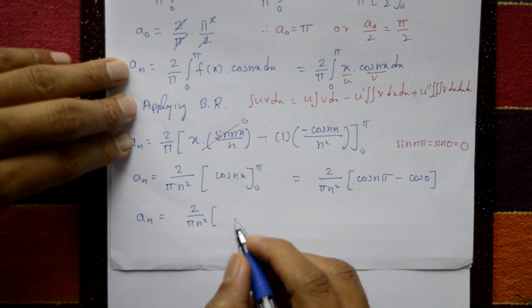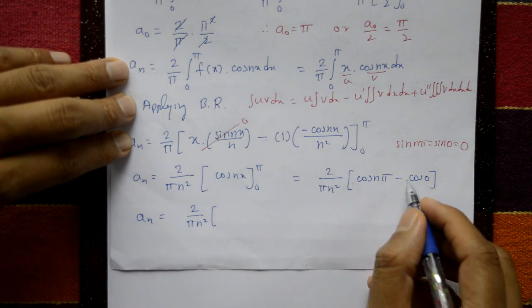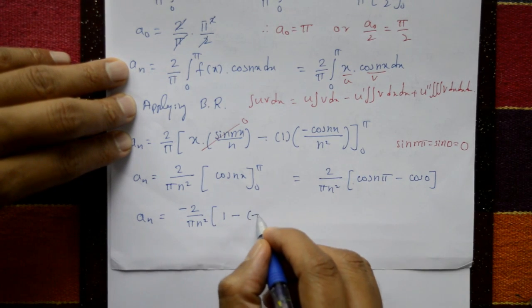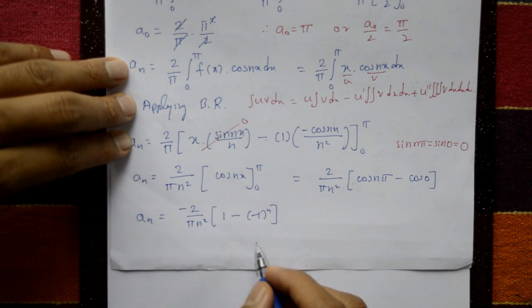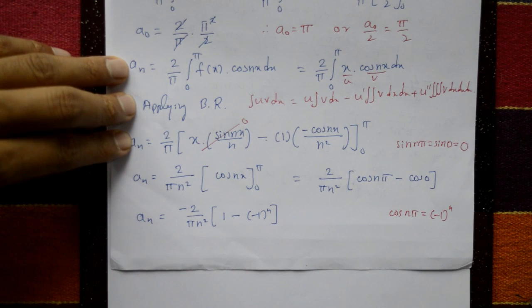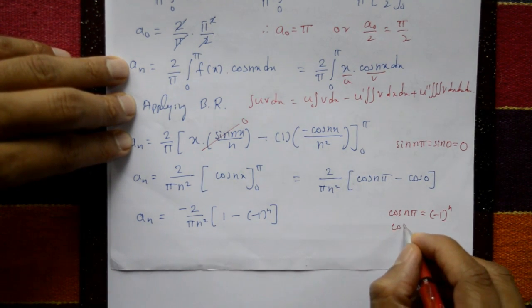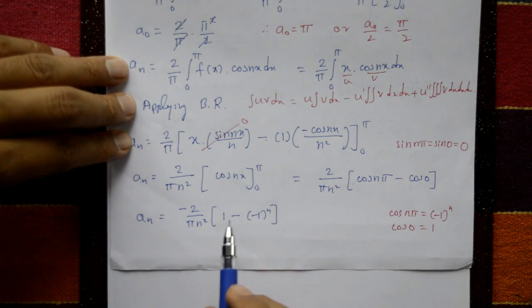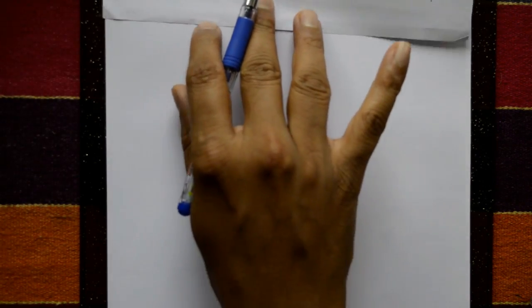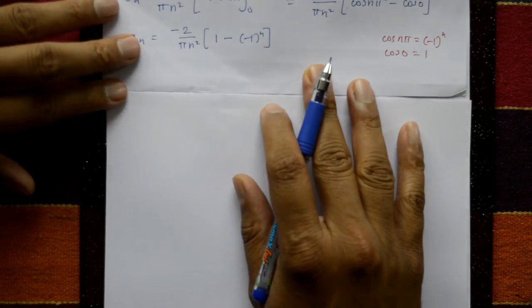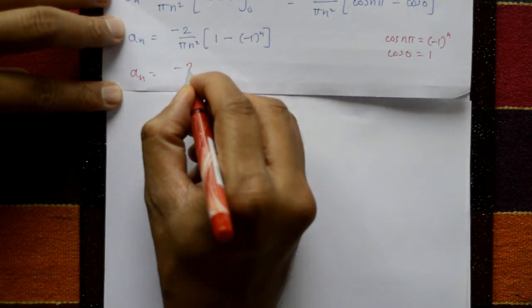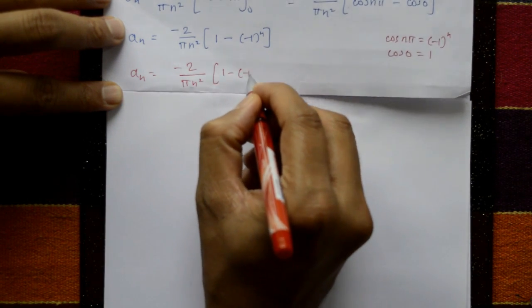cos(nπ) = (-1)ⁿ and cos(0) = 1. Taking minus outside: aₙ = (−2/πn²) × [1 − (−1)ⁿ]. Therefore aₙ = −(2/πn²)(1 − (−1)ⁿ).